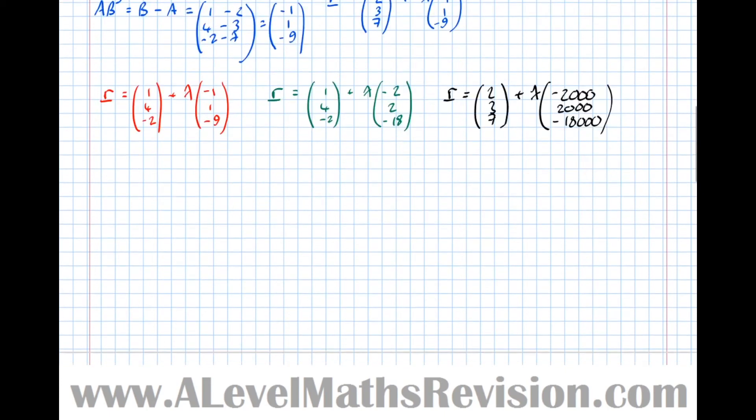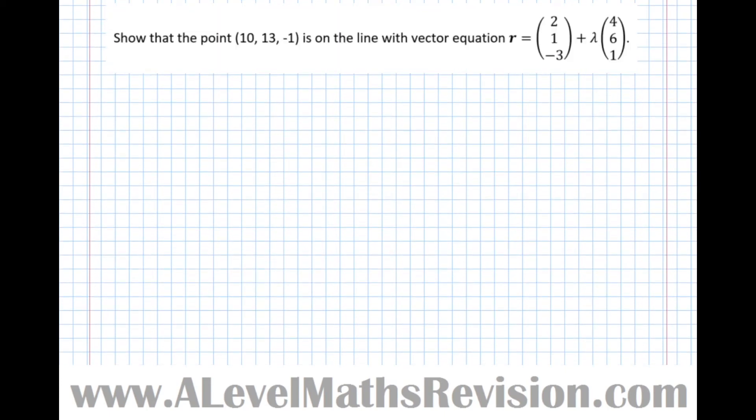So let's try another question. So this one asks us to show that the point (10,13,-1) is on the line with the vector equation R equals (2,1,-3) plus lambda (4,6,1).